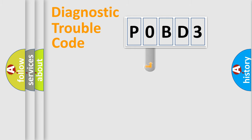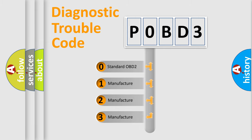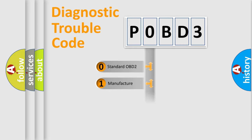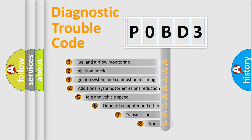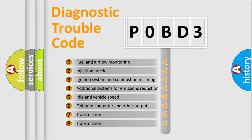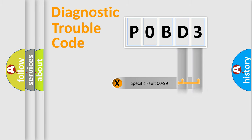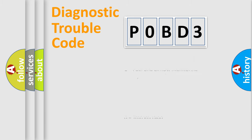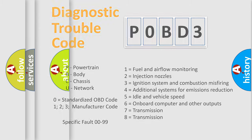This distribution is defined in the first character of the code. If the second character is expressed as zero, it is a standardized error. In the case of numbers 1, 2, or 3, it is a more specific expression of a car-specific error. The third character specifies a subset of errors. This division is valid only for the standardized DTC code, and only the last two characters define the specific fault of the group — but only when the second character is zero.